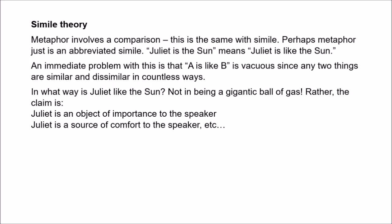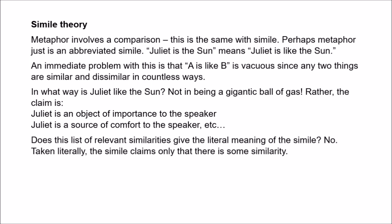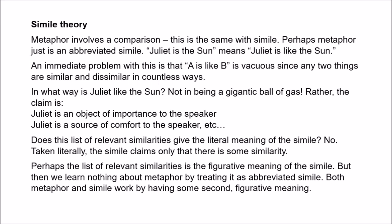The question then is: does this list of relevant similarities — 'Juliet is an object of importance,' 'Juliet is a source of comfort' — does that list give the literal meaning of the simile? When I say 'Juliet is like the sun,' does that literally mean that she is an object of importance, that she is a source of comfort? No. Taken literally, the simile declares no more than that there is a similarity between Juliet and the sun. The simile doesn't literally tell us which specific similarities are relevant — that's something we have to work out beyond the literal meanings of the terms. We might say that list gives the figurative meaning of the simile, but then saying that metaphor is abbreviated simile doesn't really help us to understand metaphor. All we learn is that both metaphor and simile work by having some kind of figurative meaning beyond their literal meaning.